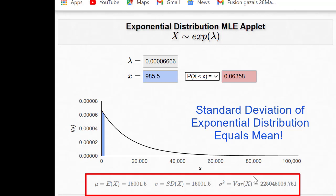Note that the standard deviation also is 15,000 and therefore we can say that standard deviation of exponential distribution equals its mean.